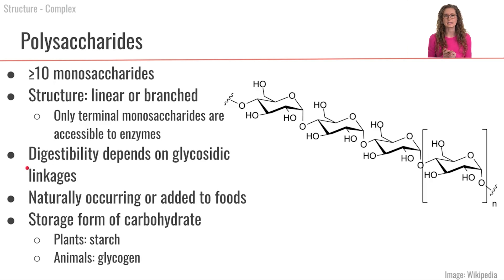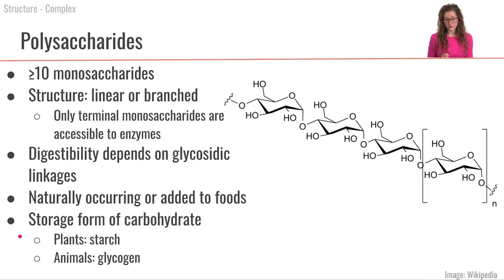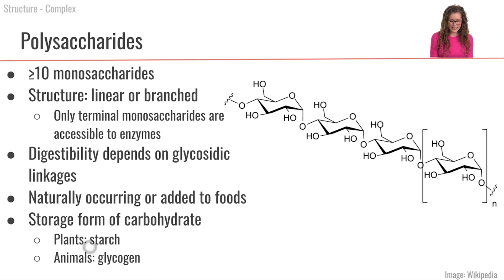The digestibility of a polysaccharide depends on what kind of glycosidic linkages it has — some allow our enzymes to hydrolyze them, others don't. Polysaccharides occur naturally in foods or can be added to food, and they serve as a storage form of carbohydrate. Glycogen is the storage form in animals, while starch is the carbohydrate storage in plants — essentially the plant equivalent of glycogen.